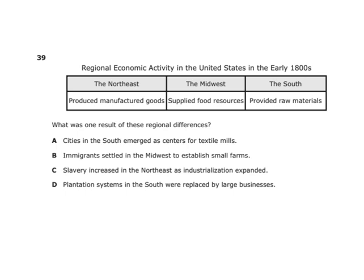Regional economic activity in the early 1800s: the Northeast produced manufactured goods, the Midwest supplied food resources, and the South provided raw materials. What was one result of these regional differences? Immigrants settled in the Midwest to establish small farms — Germans, for example, settled in middle regions for farming. Use process of elimination: if you don't know the right answer, eliminate the clearly wrong ones, and you'll be left with the correct one.